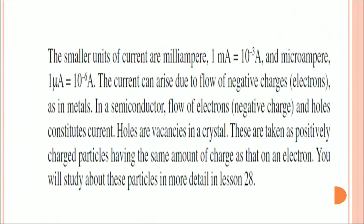As I said that the smaller units are milliamperes and microamperes. These currents can arise due to flow of negative charges that is electrons in metals and in semiconductors the flow of electrons and holes constitutes current.